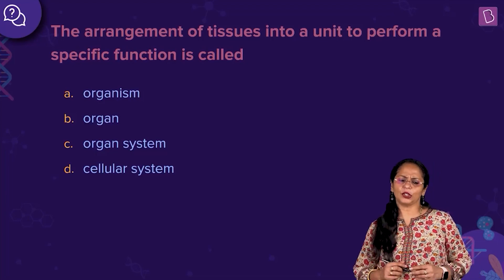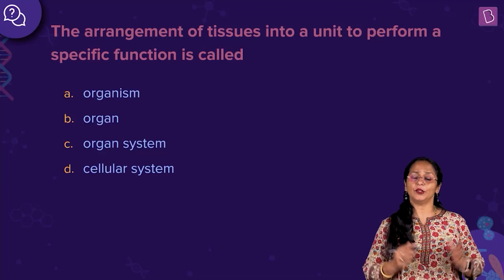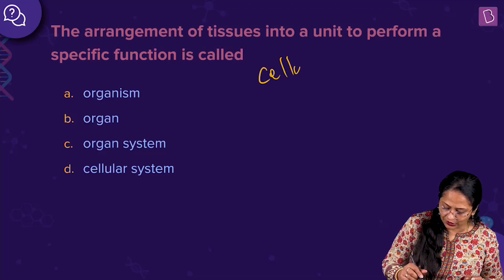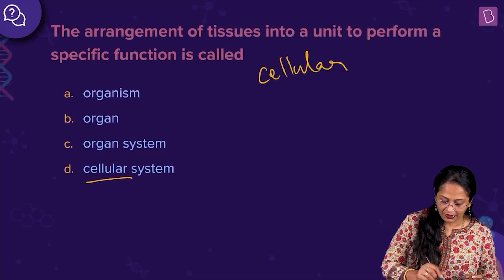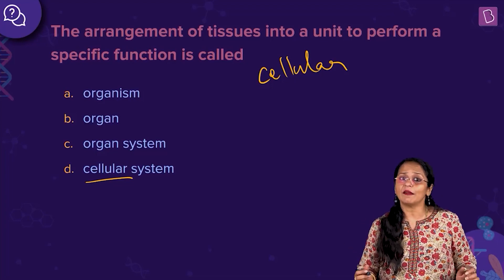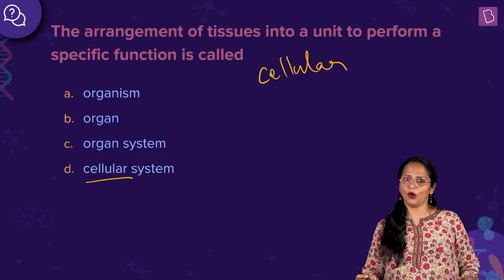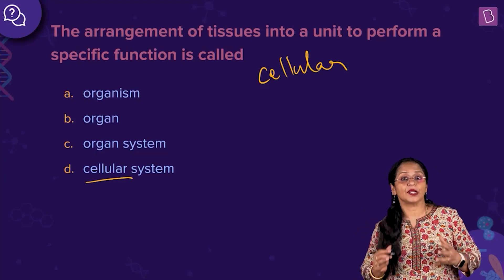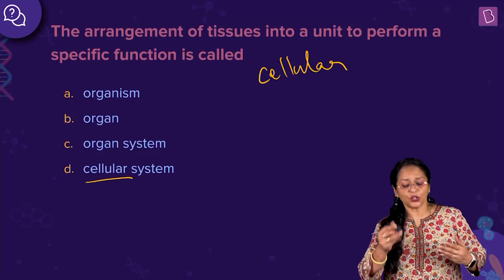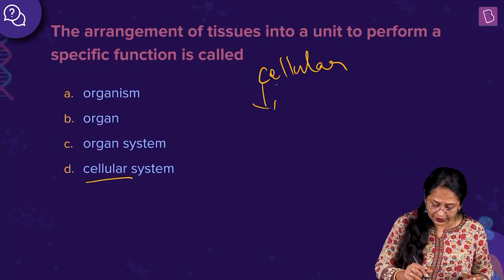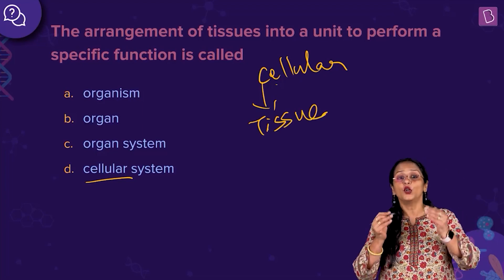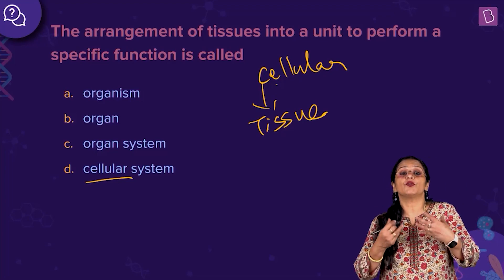I'll give you a clue. When you studied the animal kingdom, you studied the four different levels of organization. The first was the cellular level of organization — as seen in Porifera, a group of cells performing various functions. When cells join together to perform a common function, it is called a tissue — tissue level of organization. Then a group of tissues joined together forms an organ.